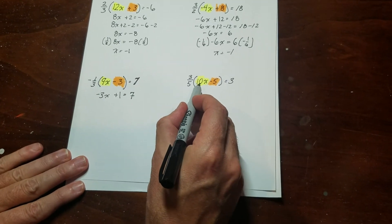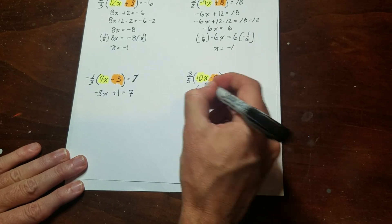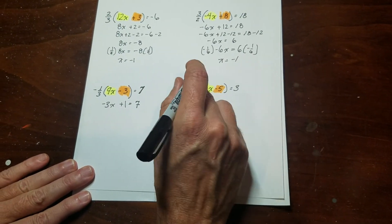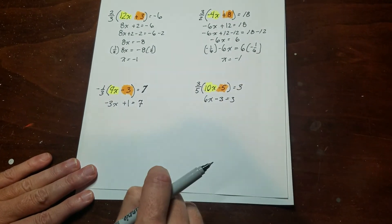This one over here, I've got 5 into 10 is 2. 2 times 3 is 6x. And then 5 goes into negative 5, negative 1. Negative 1 times 3 is negative 3. So there you go.